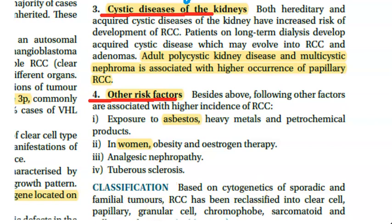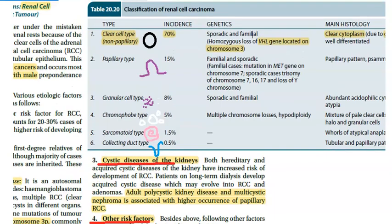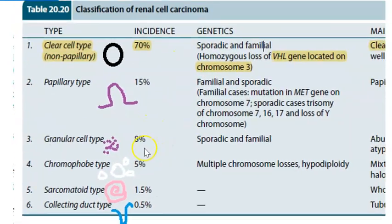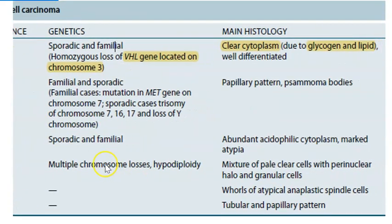Tuberous sclerosis can cause non-cancerous growths, but renal cell carcinoma is a cancerous growth. Looking at the types of renal cell carcinoma: clear cell type, papillary type, granular type, chromophobe type which is pale, sarcomatoid type with a whorl-like pattern, and collecting duct type occurring near the distal convoluted tubule and collecting duct.